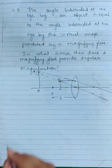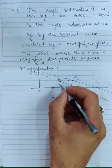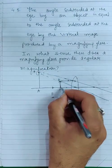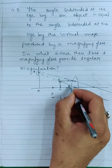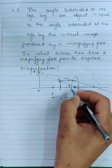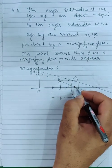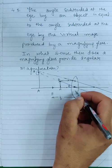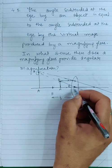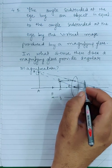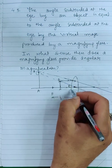Now, you can see that the object has the angle subtended at the optical center. It is assumed to be done. This is also the case for instruments like simple microscope, compound microscope, and telescope. We assume that the eye is placed at the lens.